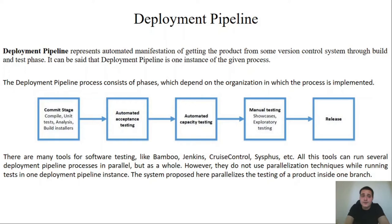Now let's go to deployment pipeline. What is the deployment pipeline? Deployment pipeline represents automated manifestation of getting the product from some version control system through build phase, test phase and in the end we can do a release phase or a deploy phase. The deployment pipeline is one instance of the given process. Deployment pipeline consists of several stages. Here in this diagram, we show deployment pipeline which consists of five stages. We go to the next stage only if the previous stage was passed correctly.